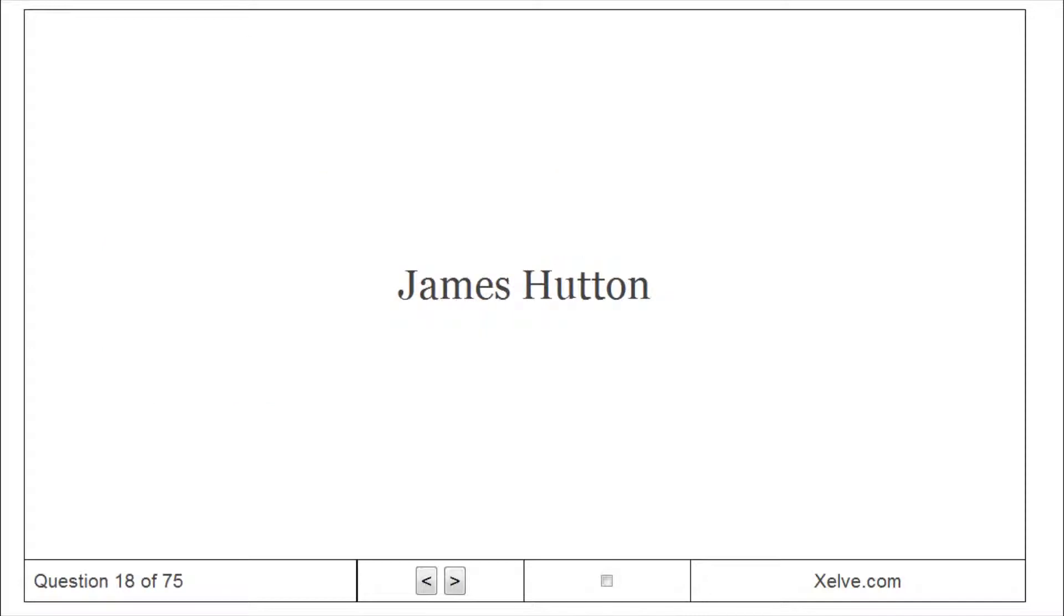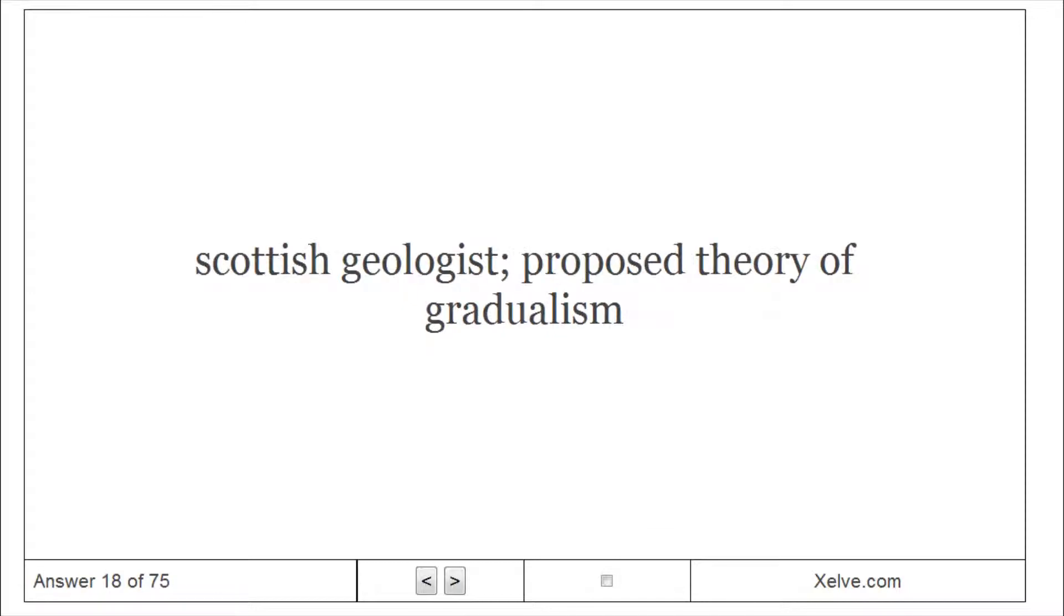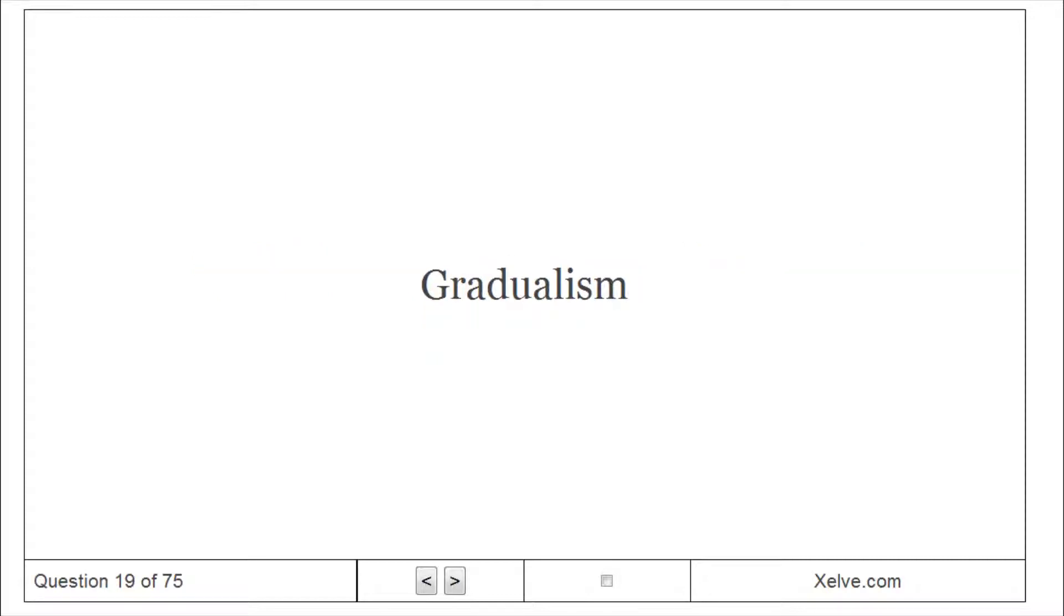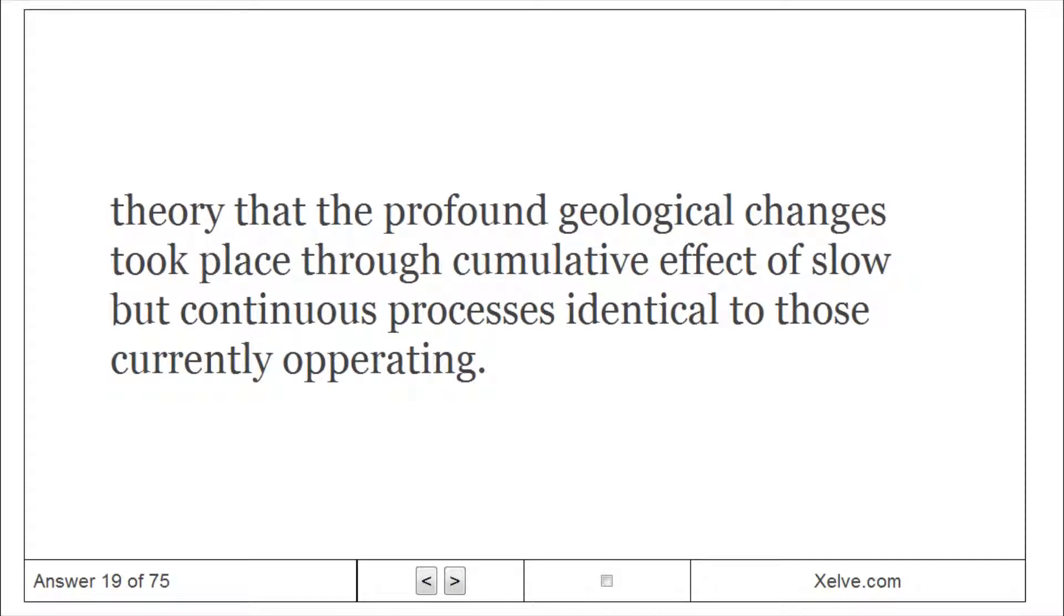James Hutton: Scottish geologist proposed theory of gradualism. Gradualism: Theory that the profound geological changes took place through cumulative effect of slow-but-continuous processes identical to those currently operating.